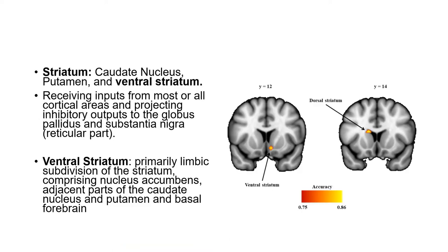The striatum is an inclusive term for the caudate nucleus, putamen, and ventral striatum. It is a major point of entry into the basal nucleus circuitry, receiving inputs from most or all cortical areas and projecting inhibitory outputs to the globus pallidus and substantia nigra reticular part. The ventral striatum is primarily limbic, comprising the nucleus accumbens, adjacent parts of the caudate nucleus, and putamen in the basal forebrain.